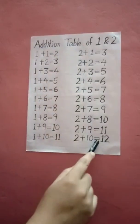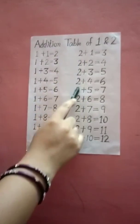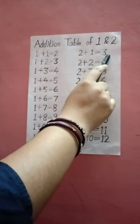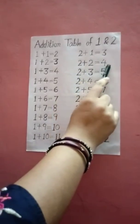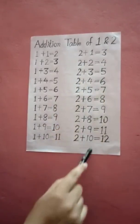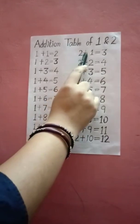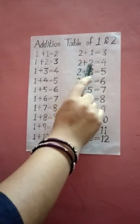Now let us see the addition table of 2. When we are talking about the addition table of 2, the number will increase by 2. For example, 1 will become 3, 2 will become 4, 3 will become 5, and so on. Let us begin with adding 1: 2 plus 1 equals 3.